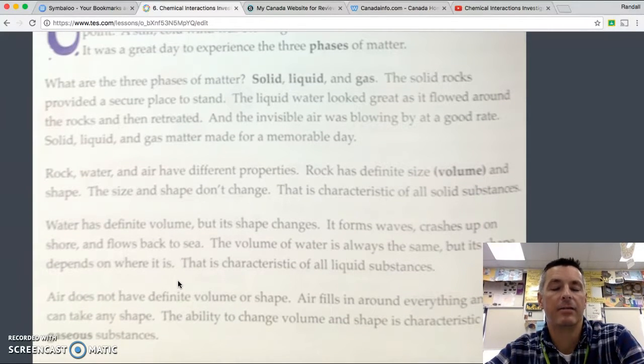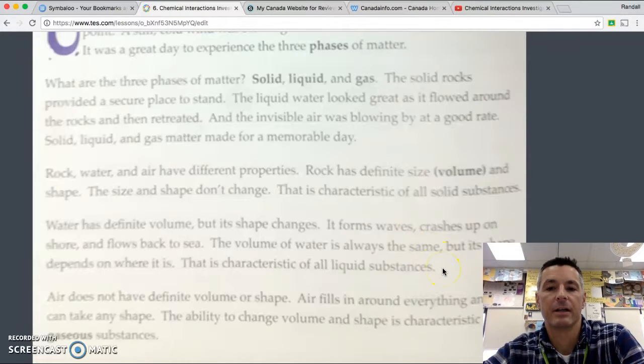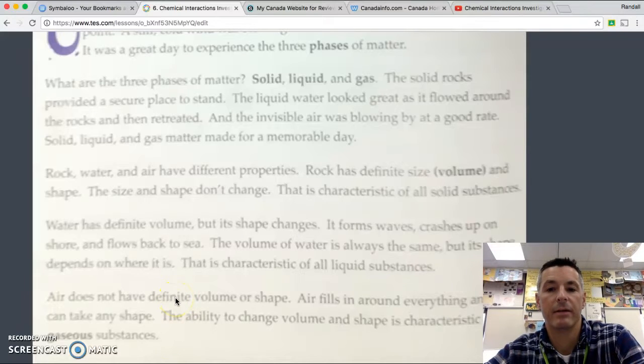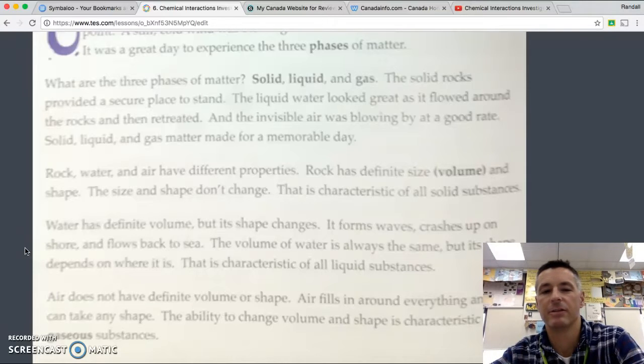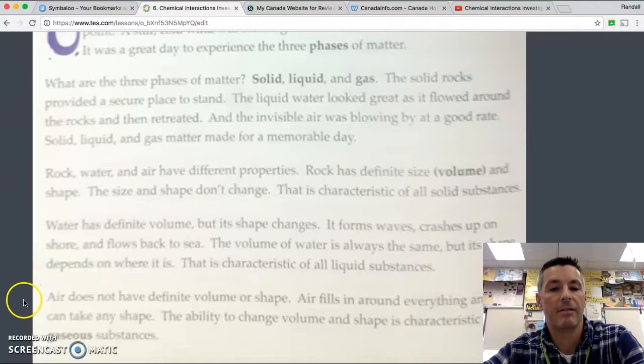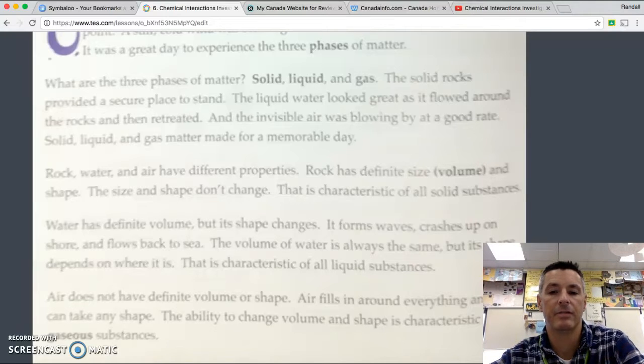Rock, water, and air have different properties. Rock has a definite size, which is volume, and shape. The size and the shape don't change. That is a characteristic of all solid substances. Water has a definite volume, but its shape changes. It forms waves, crashes up on the shore, and flows back to sea. The volume of water is always the same, but the shape depends on where it is. That is a characteristic of all liquid substances. Air does not have definite volume or shape. Air fills in around everything and can take any shape. The ability to change volume and shape is characteristic of a gaseous substance.